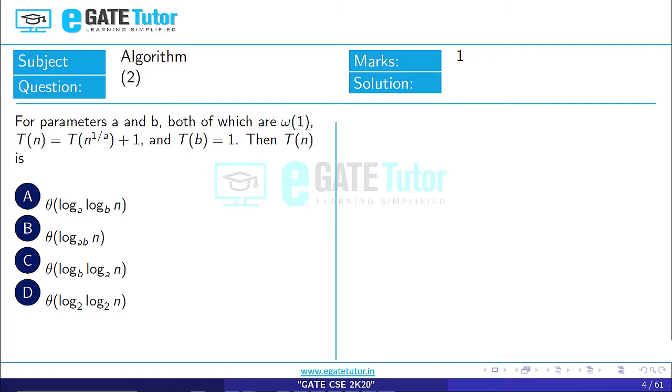Question second is asked from subject algorithm of marks 1. For parameters a and b, both of which are omega 1, T(n) is equal to T(n^(1/a)) + 1 and T(b) is equal to 1, then the value of T(n) is.